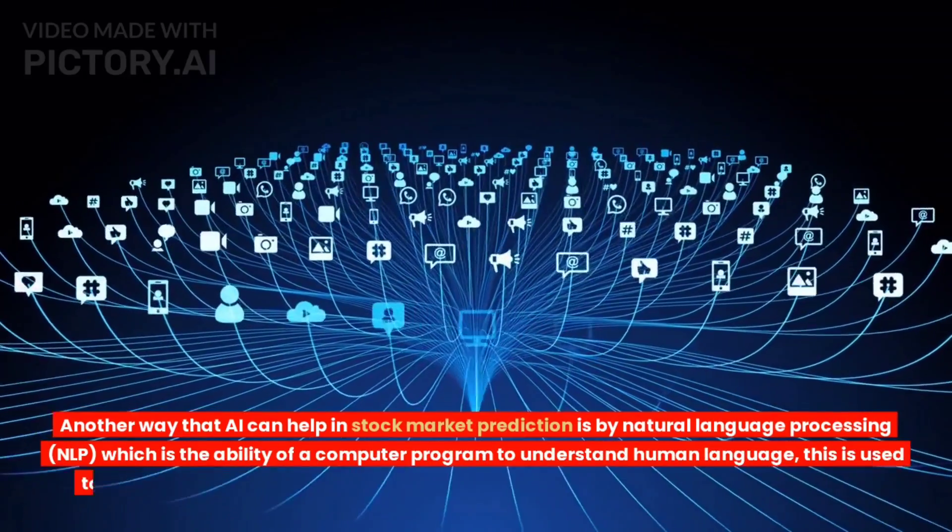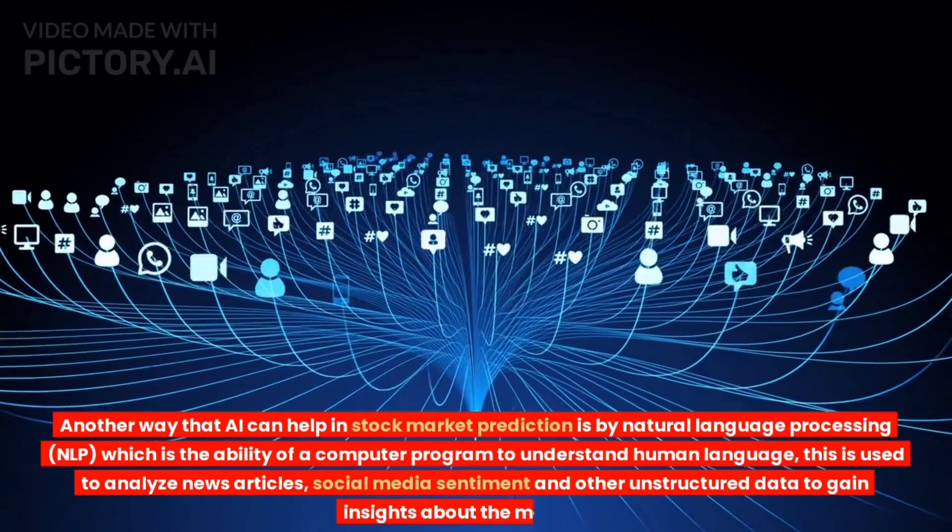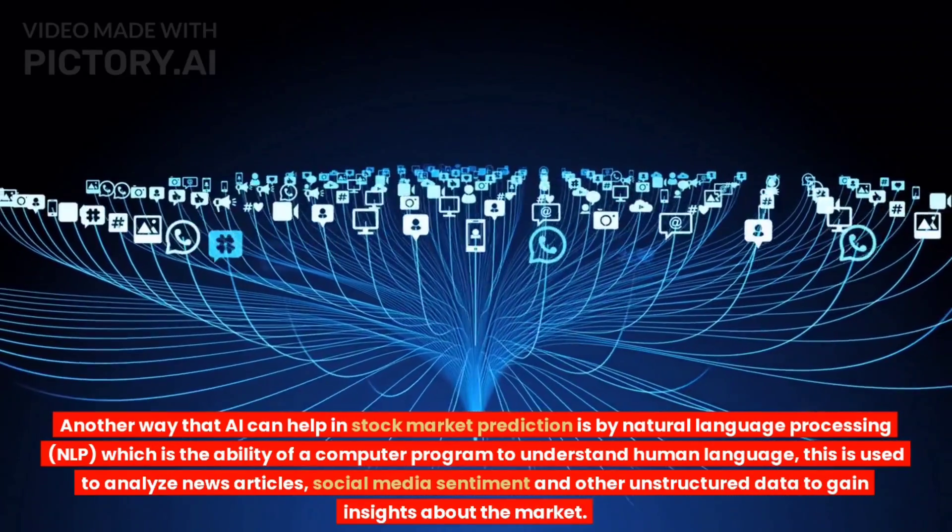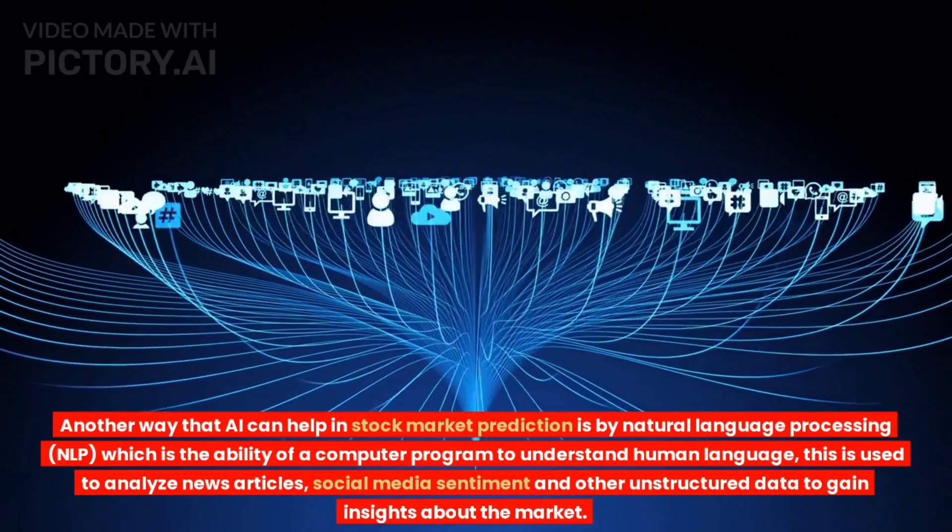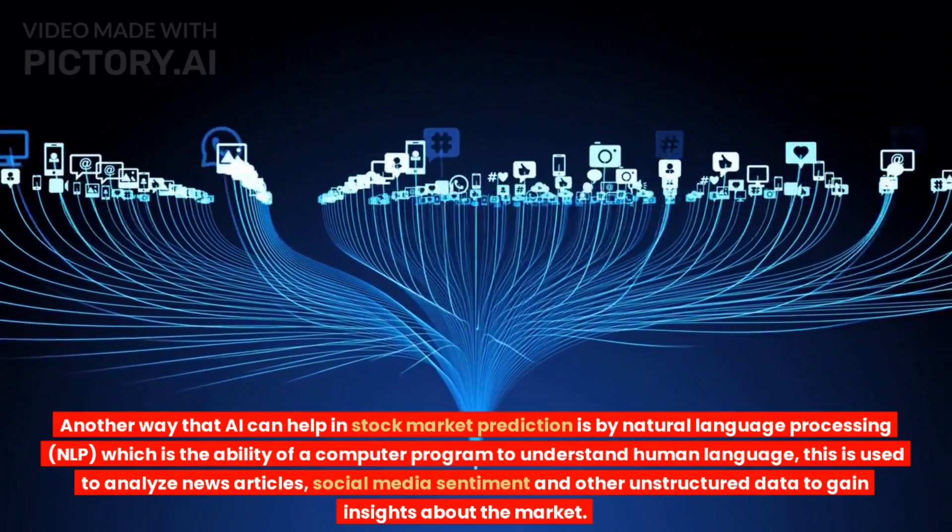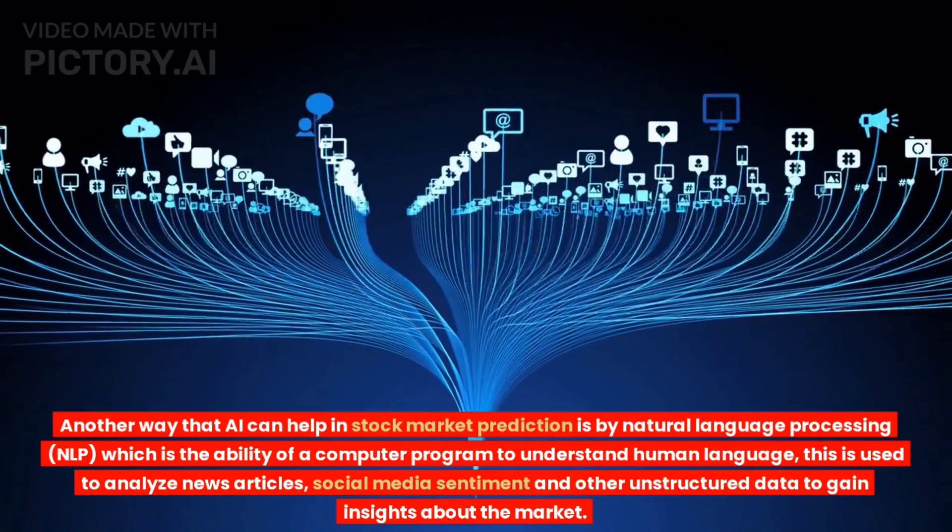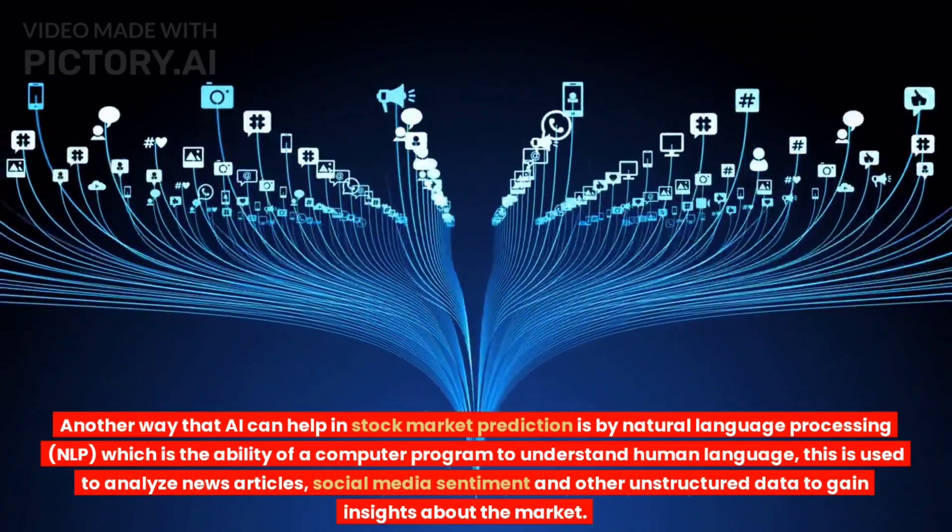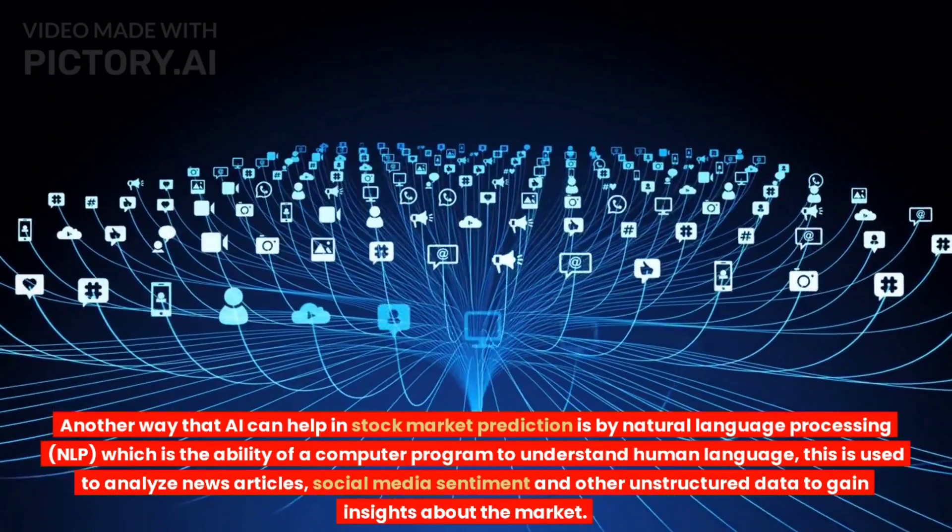Another way that AI can help in stock market prediction is by natural language processing, NLP, which is the ability of a computer program to understand human language. This is used to analyze news articles, social media sentiment, and other unstructured data to gain insights about the market.